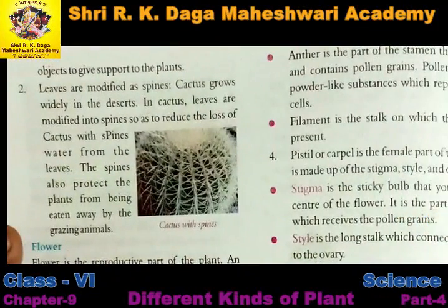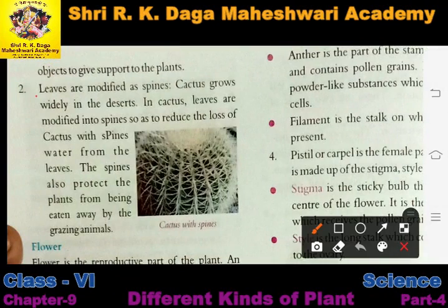As we discussed, in some plants the branches slightly curl so that they can stick around a nearby object and give support to the plant. Similarly, some plant leaves also curl themselves to give support to the plant.